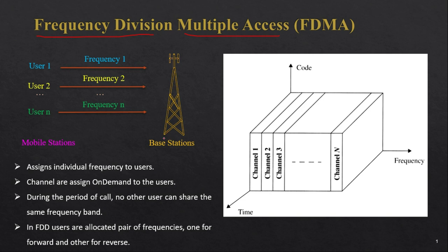As you can see in this figure, we have a base station which has one frequency band. We divide that frequency band into different frequencies, which can also be called channels. Each frequency is allocated to one single user — frequency one to user one, frequency two to user two, and frequency n to user n. The axes in the diagram represent frequency, time, and code.